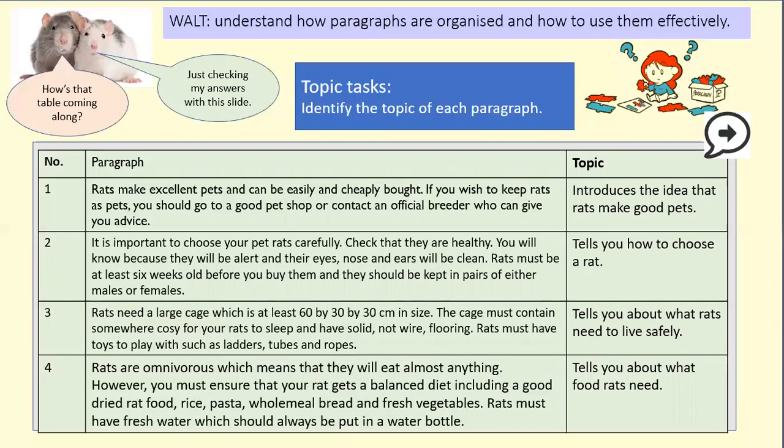Paragraph one was talking about rats being good pets. Paragraph two was telling you how to choose a rat. Paragraph three was telling you how to allow them to live safely. Paragraph four was about the food they need. You might have noticed that the topics of each paragraph came in the first sentence — this is called a topic sentence. So if you wanted to find out how much space you need, you could skim and scan through to find the paragraph about cage size.